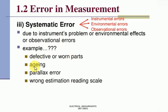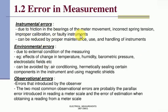Defective or worn-parts aging, parallax error, wrong estimation, reading scale. Instrumental error, environmental, observations - these all are studied. Instrumental error due to the friction in the bearings of the meter movement, incorrect spring tension, improper calibration or faulty instruments. Instrumental error can be reduced by the proper maintenance, use and handling of the instruments.